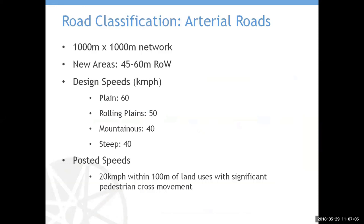One key emphasis was on looking at the complete trip chain — access from origin to destination. The principles underpinning urban roads and streets focus on accessibility, safety and comfort, ecology, and social concerns. The road classification recommended includes arterial roads, sub-arterial roads, collector streets, local streets, and special cases including urban expressways and NMT streets.